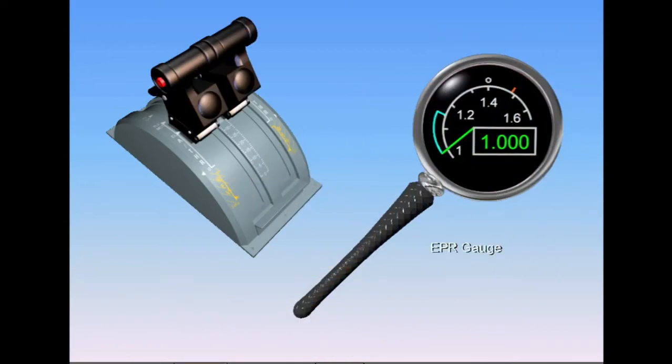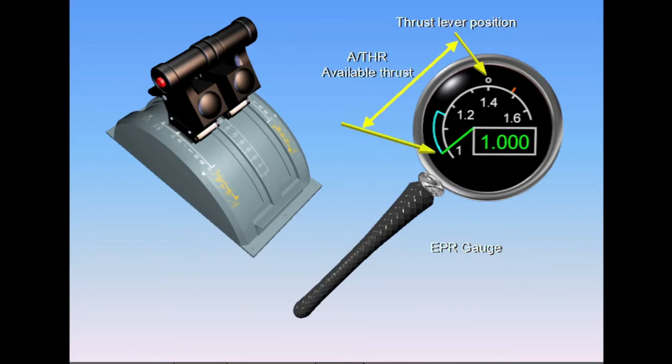When the Autothrottles are on, the thrust lever position determines the maximum thrust which can be commanded by the system. Thrust lever position is indicated by a white doughnut on the EPR gauge. This doughnut indicates the maximum amount of thrust available to the Autothrottle system on that engine.